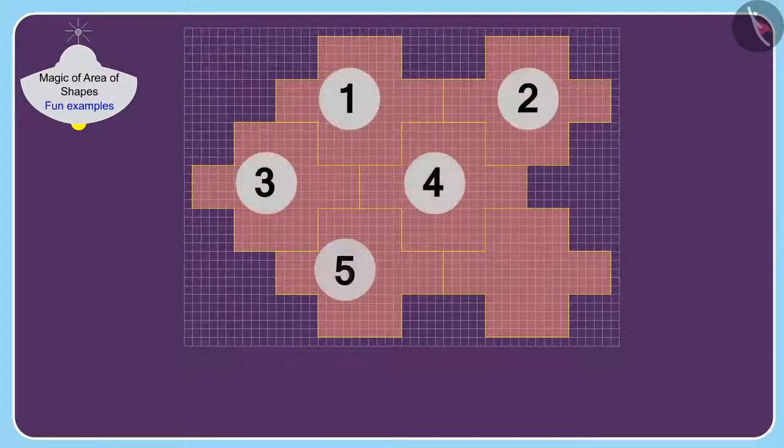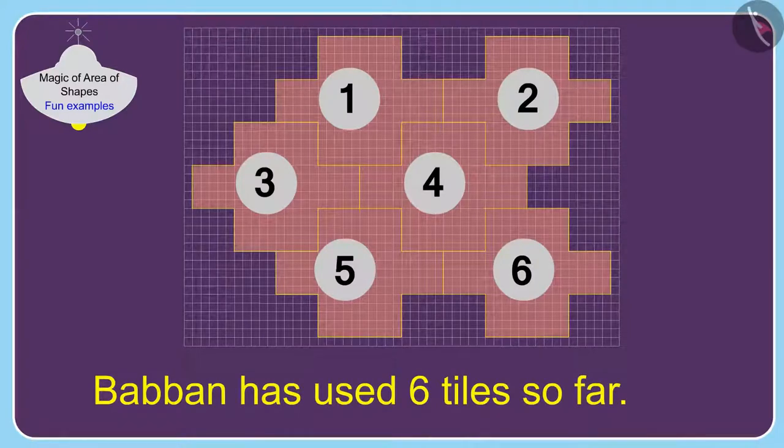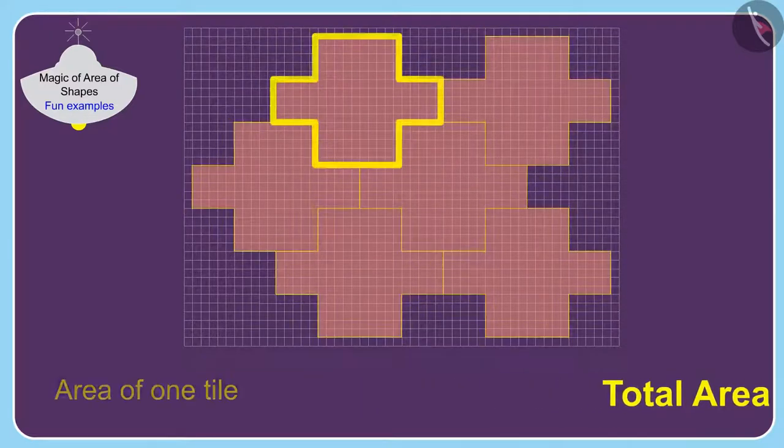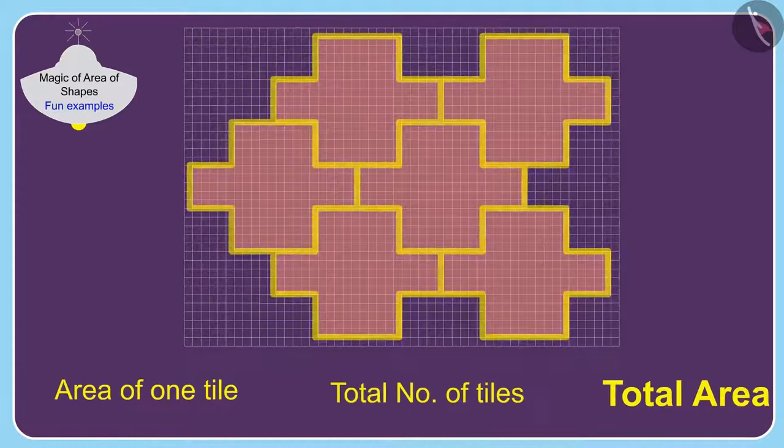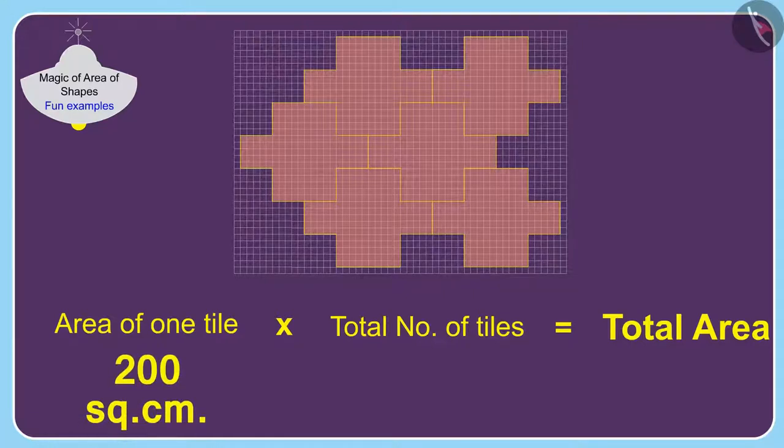Yes, Babban has used 6 tiles so far. Now, it is very easy. To find the total area, we only have to multiply the area of one tile by the number of total tiles. In this way, the total area covered by the tiles will be 200 multiplied by 6, 1,200 square centimeters.